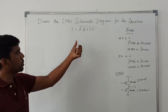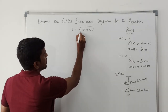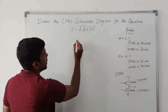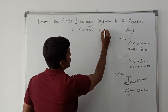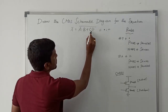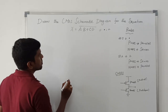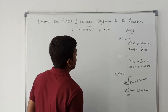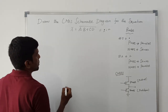Now we are going to draw the schematic diagram. First I read the expression: x equal to A dot B plus C dot D. This expression involves two operations — dot and plus. So A dot B and C dot D are two product terms with one sum. The dot operation means PMOS connected in parallel and NMOS connected in series. Each variable carries one PMOS and one NMOS transistor.